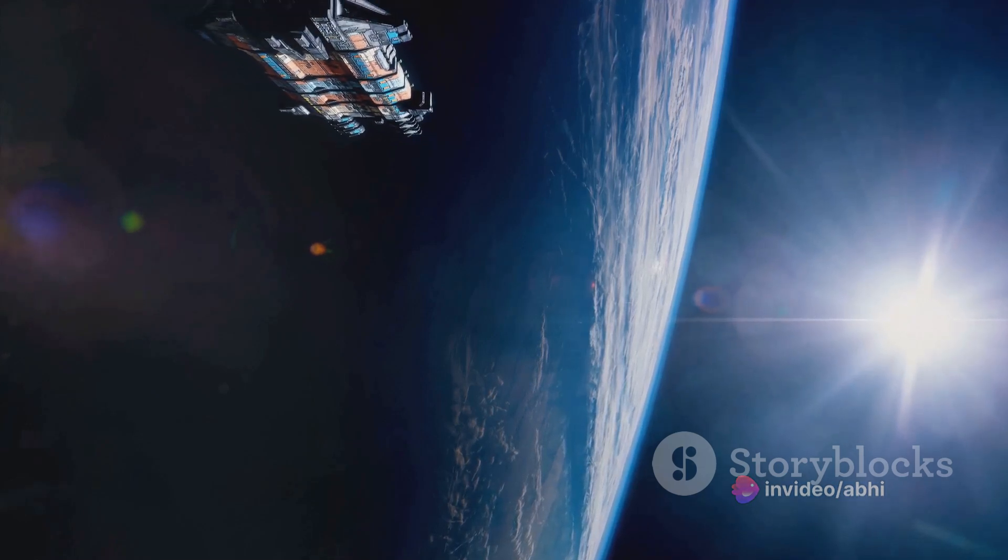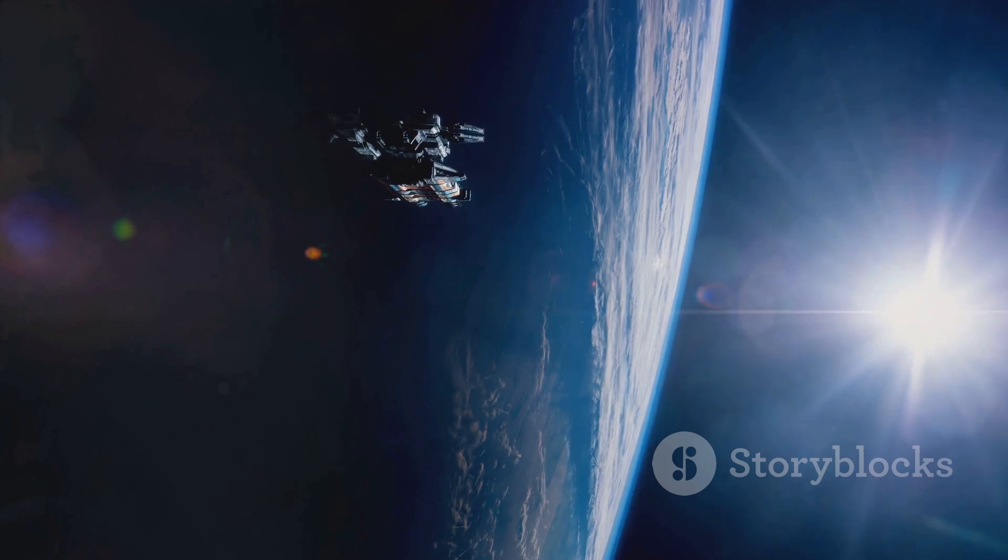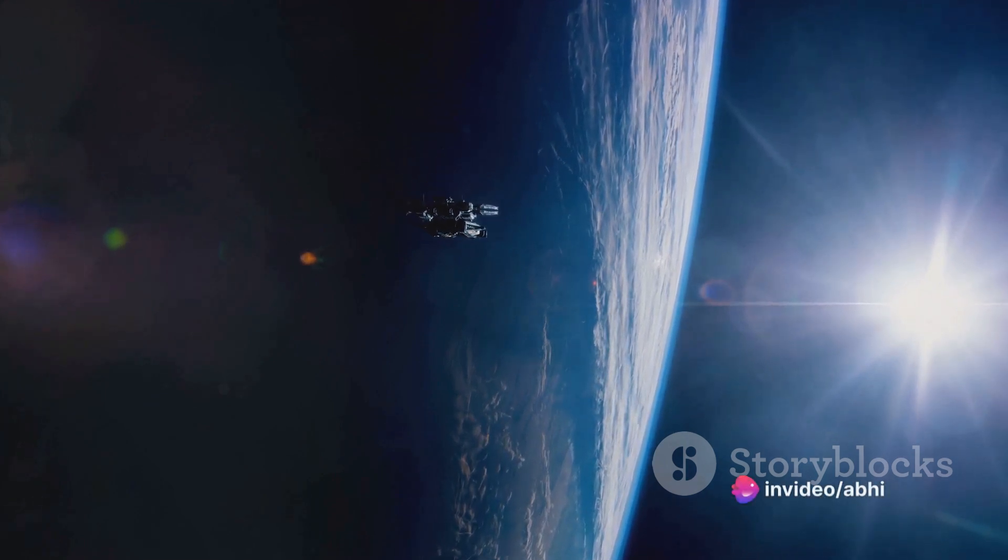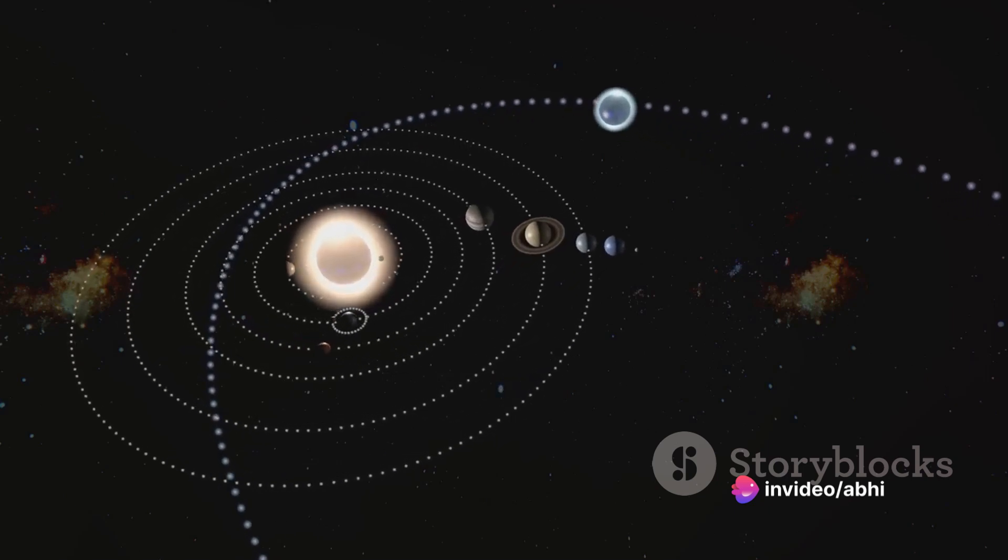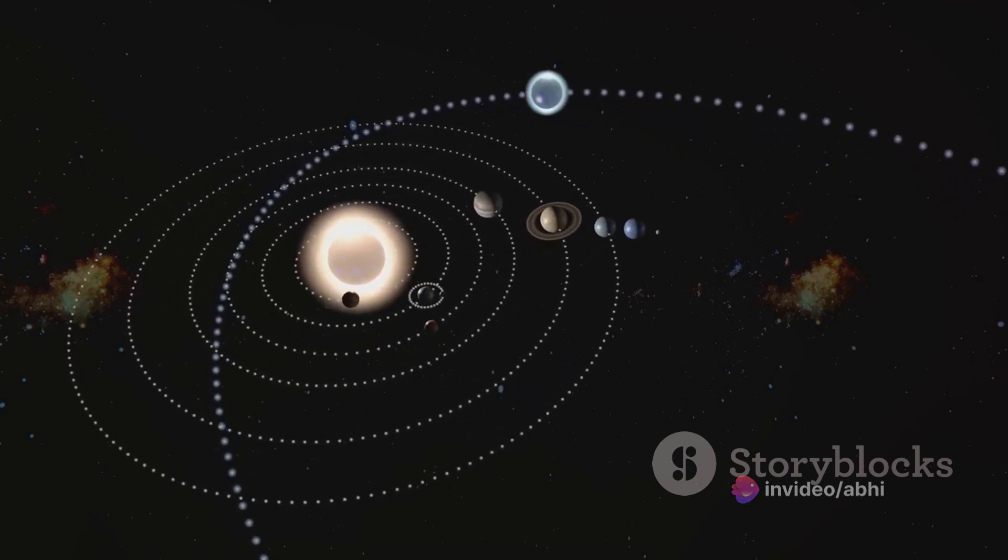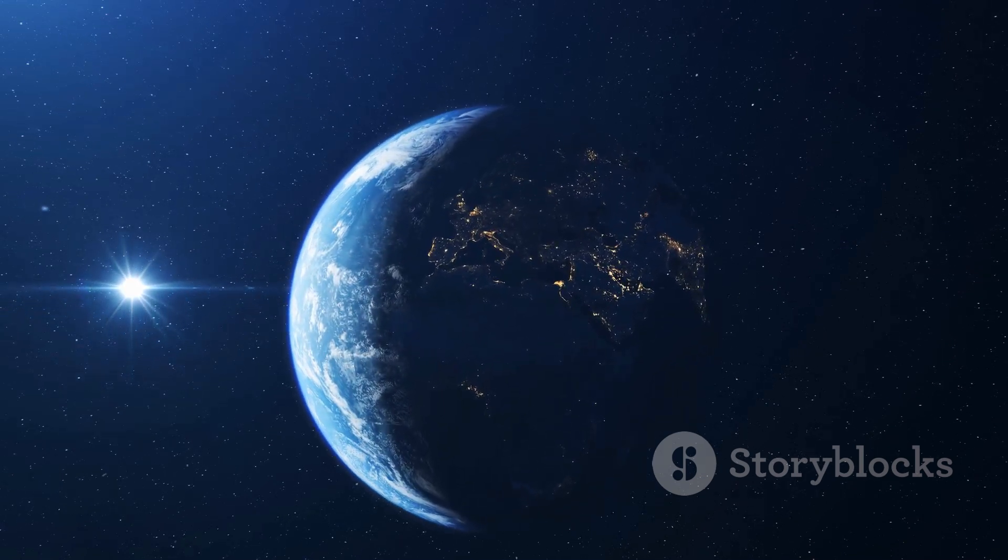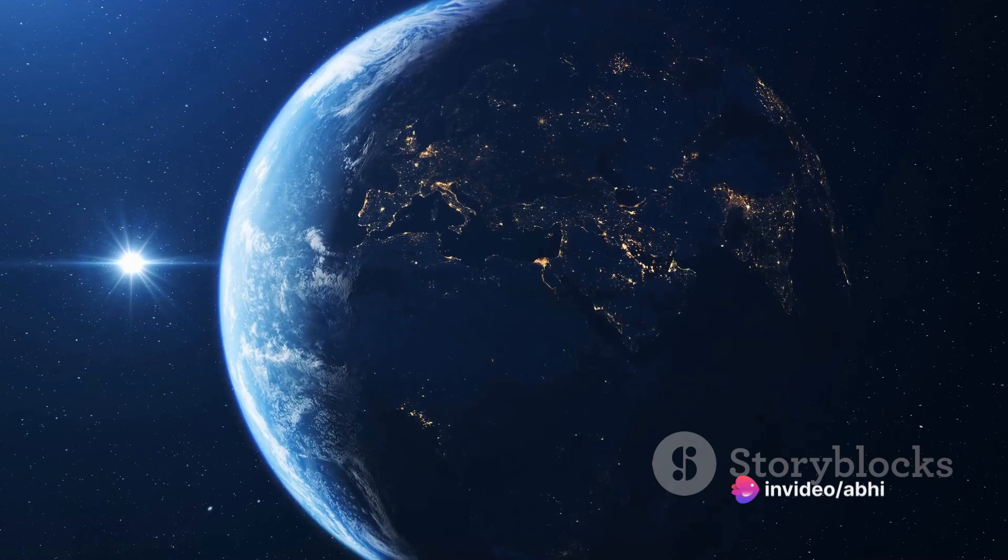But what happens as the planet embarks on its journey away from the Sun, altering its position in the vast celestial tapestry? The gravitational pull doesn't stay constant. As the distance between the Sun and the planet increases, the gravitational force starts to diminish gradually. The farther the planet, the weaker the gravitational hold, akin to a stretched rubber band losing its tension.